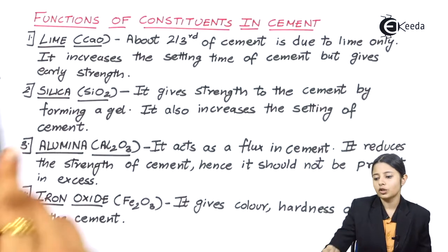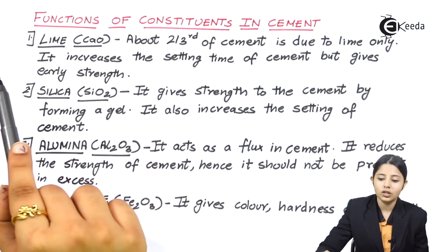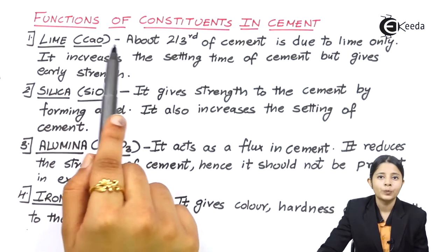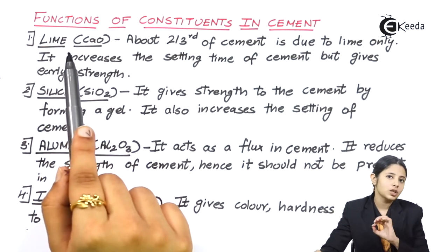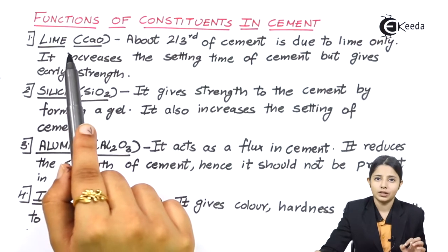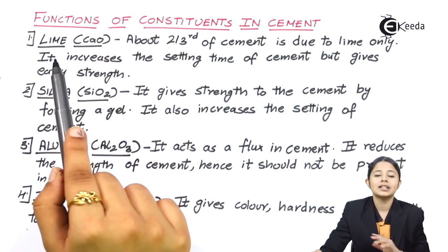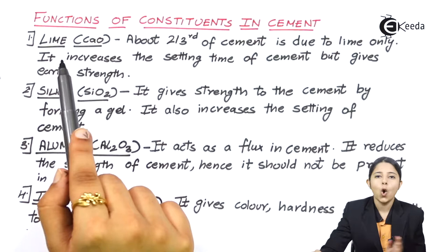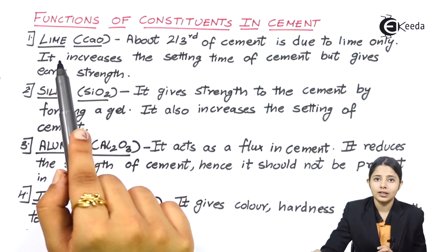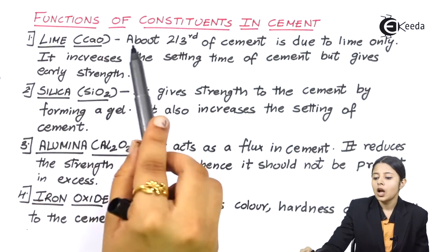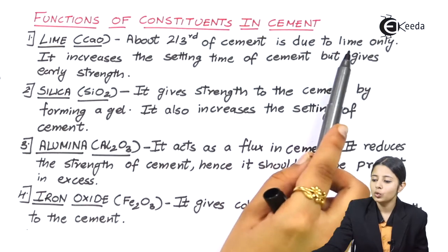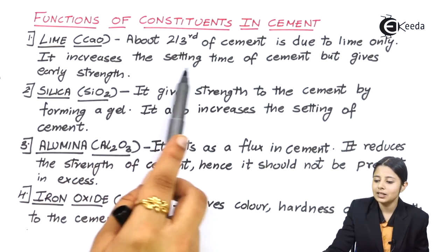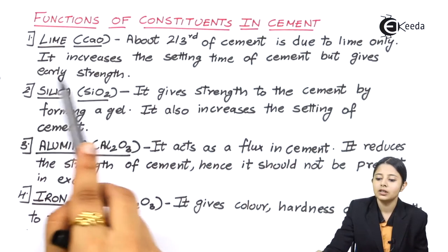Let us see the different functions of constituents in cement. The first one is Lime, CaO. Lime is one of the most important constituents of cement. It is present in the cement in the maximum proportion than all other constituents. About two-third of cement is due to lime only. It increases the setting time of cement but gives early strength.